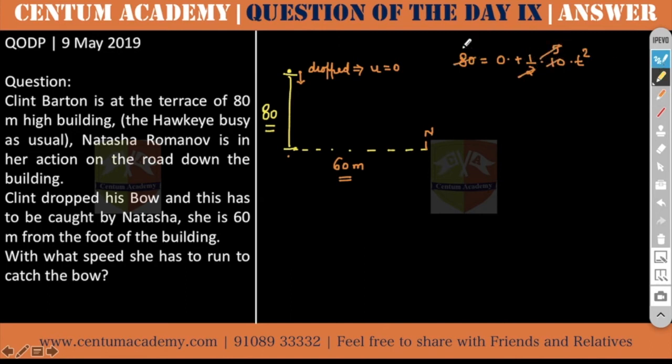This implies that t is equal to 4 seconds. In 4 seconds this bow will fall down.